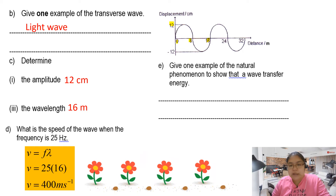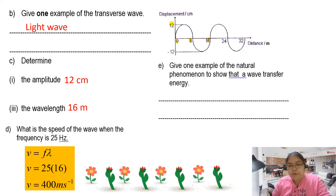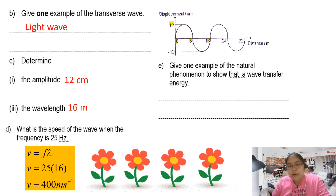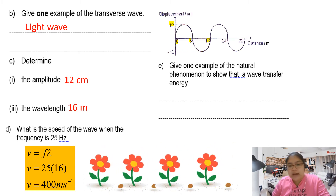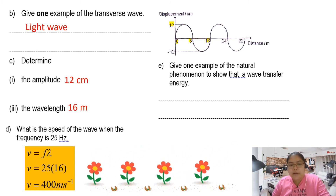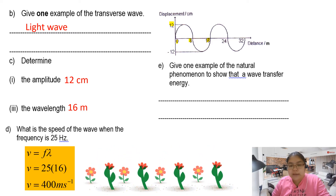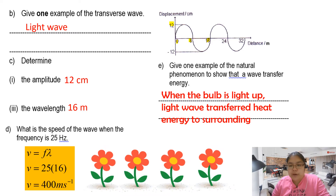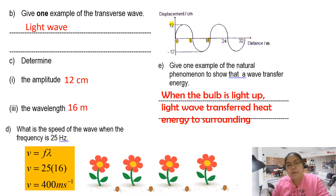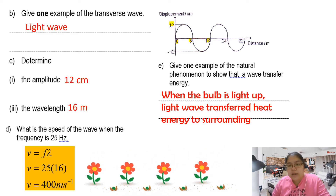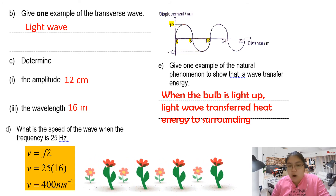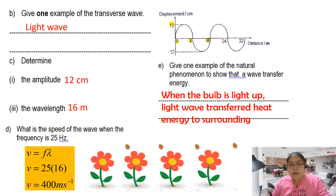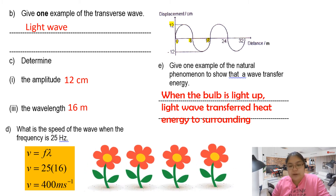Give one example of a natural phenomenon to show that waves transfer energy. We're going to think about a simple one — how does the situation transfer energy? One natural phenomenon: when a bulb is lit up, the light wave transfers heat energy to the surrounding. When it's on, you go to touch it and you find it becomes hot already. It means they transfer the heat energy. So this is one example of the natural phenomena.